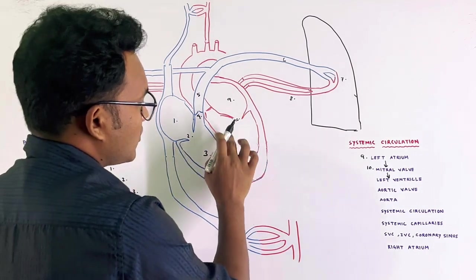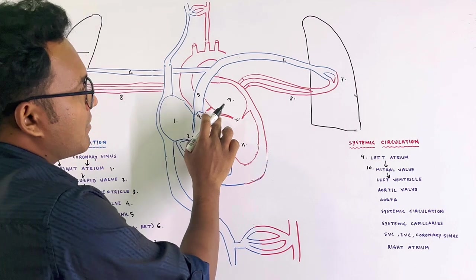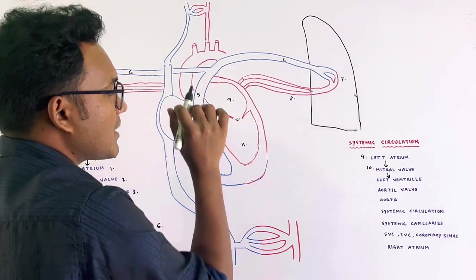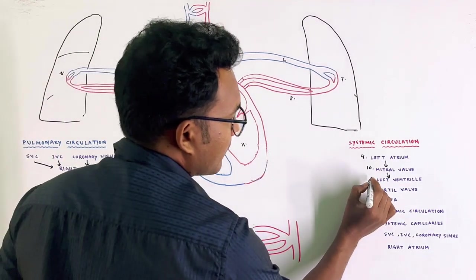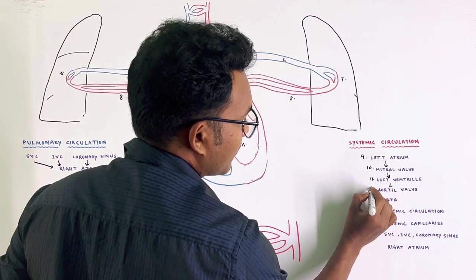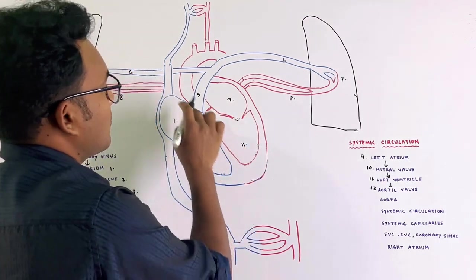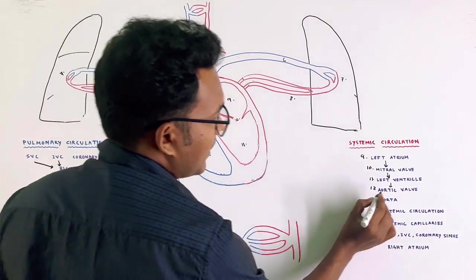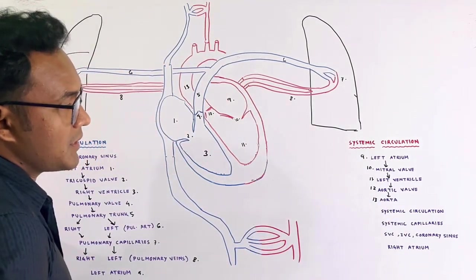From the left ventricle, blood exits through the aortic valve, also called the aortic semilunar valve. This is where blood leaves the left ventricle to enter the aorta.